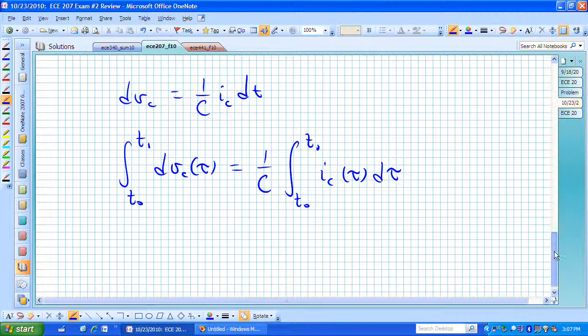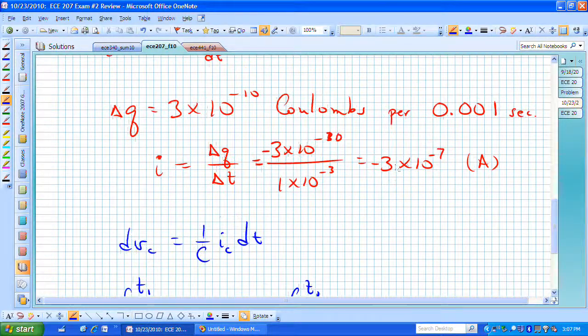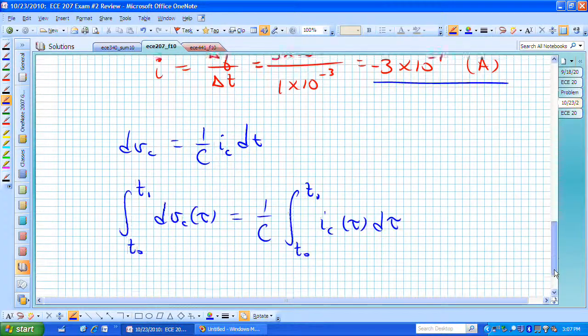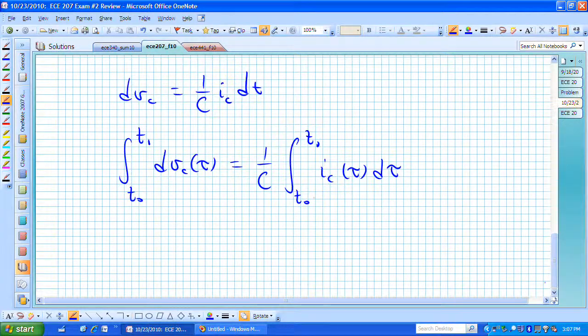And what we know from this statement in the problem is that our current is actually constant. And that allows us then to say that v sub c of t1 minus v sub c of t sub 0 is equal to 1 over c. We know what c is. Then this constant current, it's not a function of time, we can pull that out and we now have this integral from t sub 0 to t1 d tau.